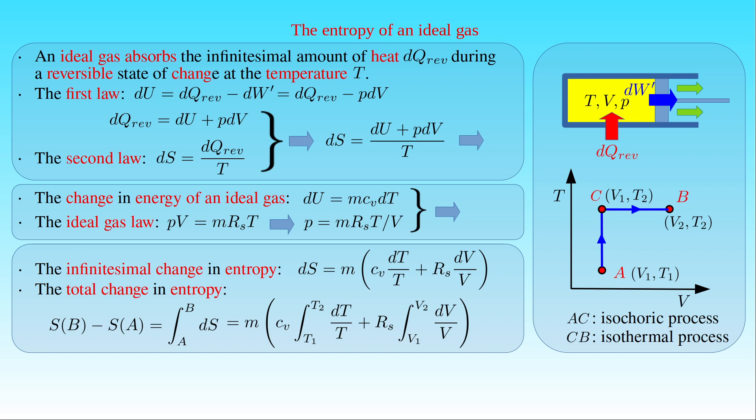Since the first process is an isochoric one, we integrate the expression for dS with respect to temperature T from T1 to T2. The second term in the parentheses does not depend on temperature and has no contribution to the integral. Similarly, since the second process is isothermal, dS must be integrated with respect to volume V from V1 to V2, where the first term in the parentheses has no contribution to the integral.